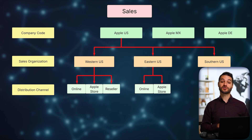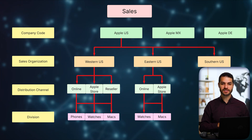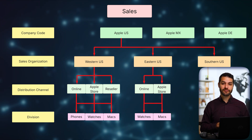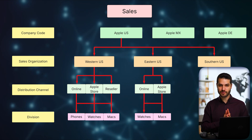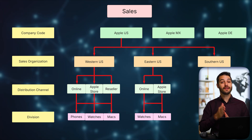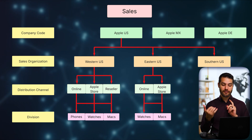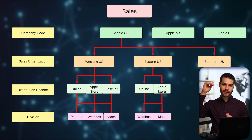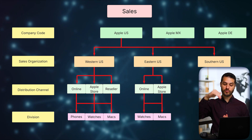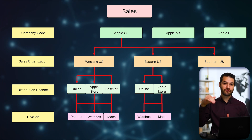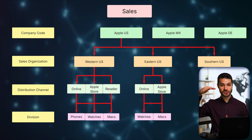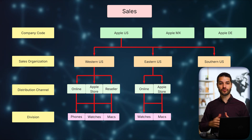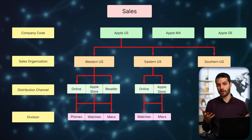Below distribution channel is division, which is quite flexible — it's common to have just one common division, or you can have a more segmented system. In this example, divisions represent product classes: phones, watches, and Macs. This creates a matrix — online might sell phones, watches, and Macs, while Apple stores might only sell phones and Macs. Western US might have all three divisions, while another sales organization might have fewer, whatever works for the company.